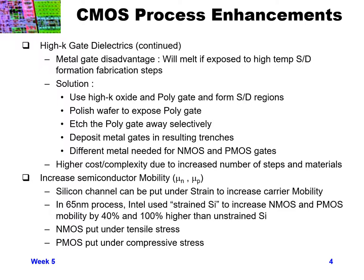Another process enhancement is increasing the mobility of your semiconductor. The speed of your transistor and the amount of current it can carry is related to μn and μp, the mobility of your N or P carriers. If you take your silicon channel and put it under some strain, you can actually increase your carrier mobility. In the 65 nanometer process, Intel started using strained silicon to increase NMOS mobility by 40 percent and PMOS mobility by up to 100 percent compared to unstrained silicon. NMOS must be put under tensile stress while PMOS must be put under compressive stress.